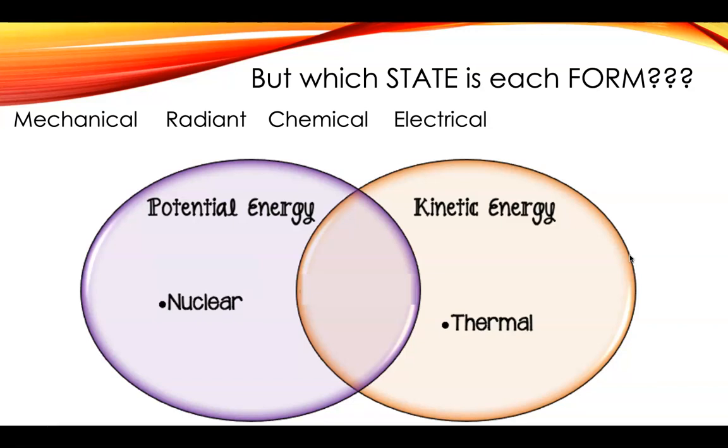Electrical energy comes from moving electrons, so that is kinetic. Chemical energy, locked in the bonds between atoms, so that's a form of potential energy.